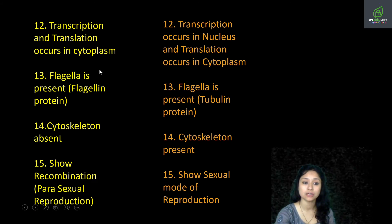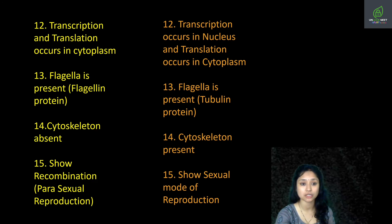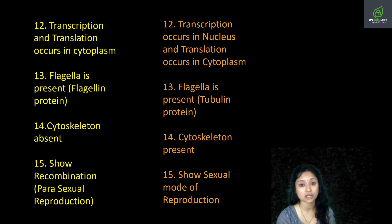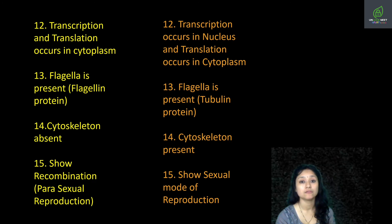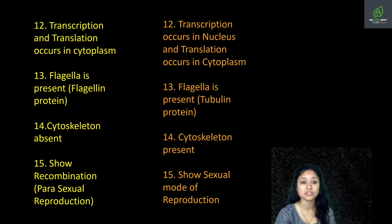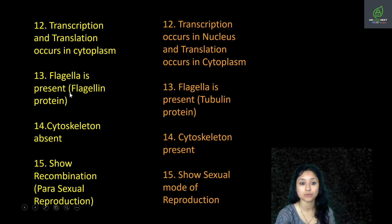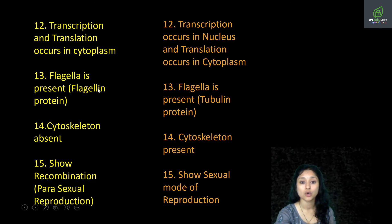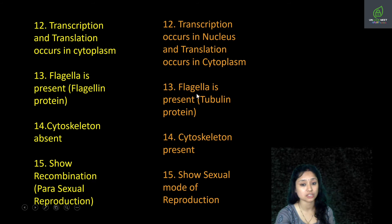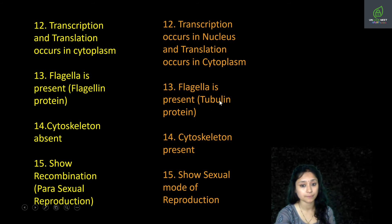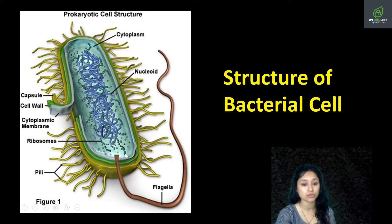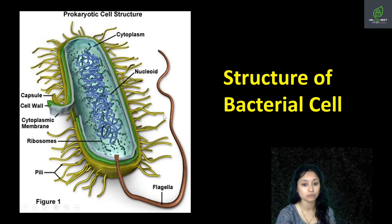Next is flagella. Flagella are the locomotory structures which help in movement of an organism. In prokaryotes, flagella are composed of flagellin protein. In eukaryotes, flagella are composed of tubulin protein. In the diagram you can see the flagella on the prokaryotic cell, which help the organism in locomotion.